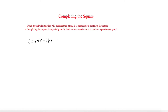The last thing we need to do is find the points of intersection. To do this we make the expression equal to zero. We rearrange to find x: first we move the minus 54 by adding 54 to both sides, giving x plus 8 squared equals 54. Then we square root both sides to get x plus 8 equals plus or minus root 54. Remember that it's plus or minus — this is very important as it gives you the two answers.